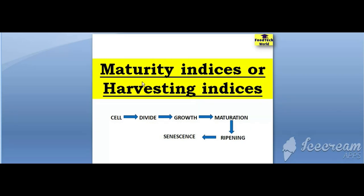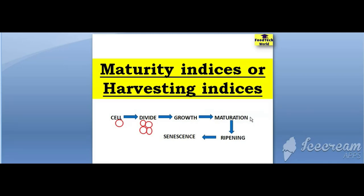Now we will discuss about the maturity index, also known as harvesting index. We know that cell is the basic structural and functional unit of life. When this cell divides, it forms a cluster of cells like this. This cluster of cells further grows in size and gets matured. After maturation, ripening happens, and at last senescence and cell death occurs.